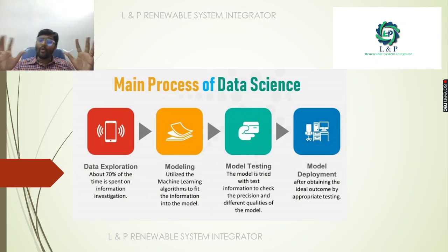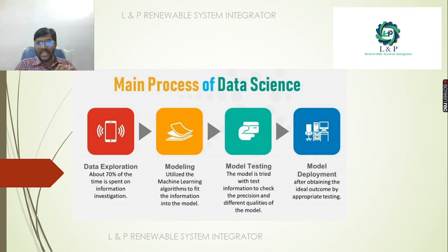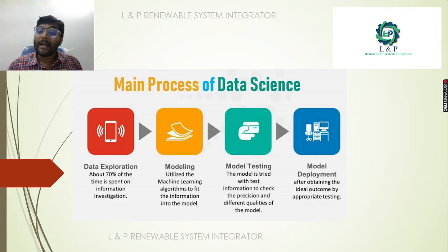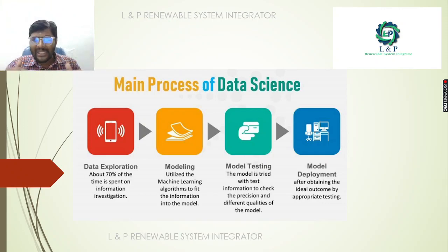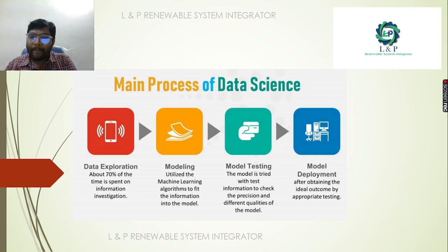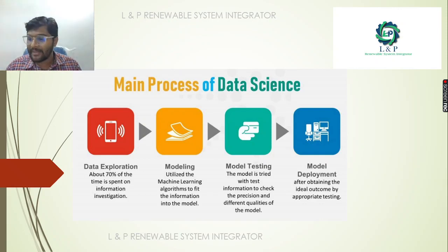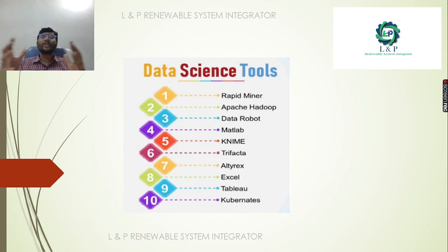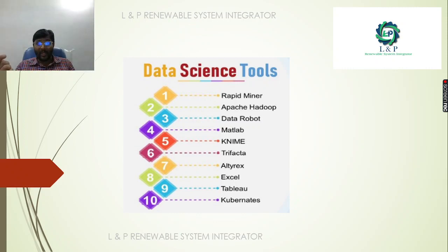There are four main processes of data science. First is data exploration — 70% of the time is spent in information investigation. Second is modeling, which utilizes machine learning algorithms to fit information into a model. Third is model testing — R&D is done to create precision in the model. Fourth is model deployment — after obtaining ideal outcomes from appropriate testing, the model is deployed. Tools used for data science include RapidMiner, DataRobot, MATLAB, Excel, Tabula, and Trifacta.